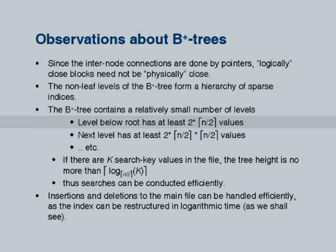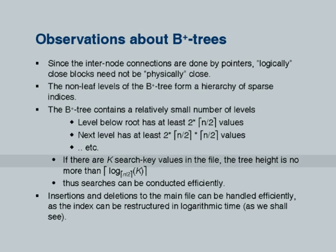Here is a formula. The level below the root contains at least 2 times ⌈n/2⌉ values. The next level has ⌈n/2⌉ times that, and in general, if there are k search key values in a tree and the size of a node is n pointers, the minimum number of pointers is ⌈n/2⌉. The tree height is no more than ⌈log base ⌈n/2⌉ of k⌉. That is why n being large is important: log base 2 of a million is 20, but log base 100 of a million is only 3.